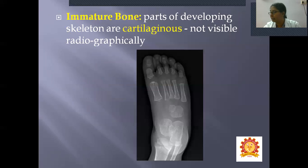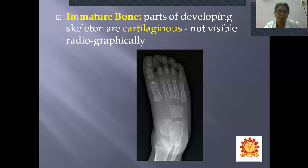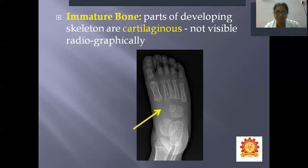Immature bones — parts of a developing skeleton or cartilaginous bones — will not be visible radiographically because they are cartilaginous. For example, in the foot of a child, all seven tarsal bones are not seen completely.